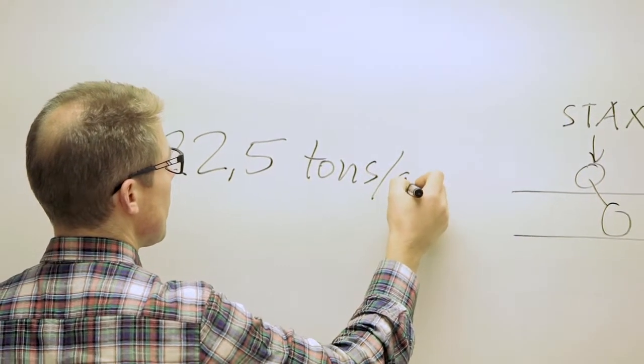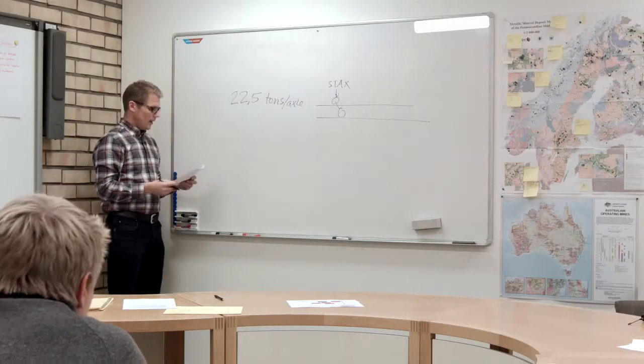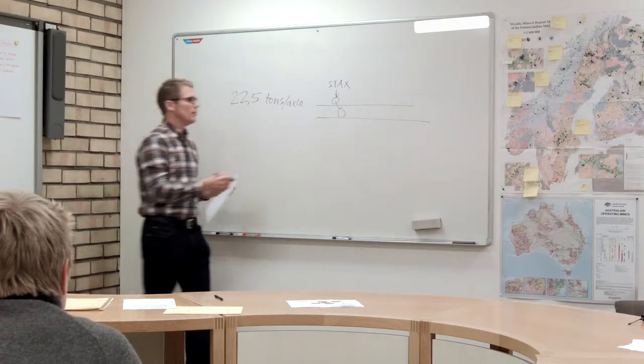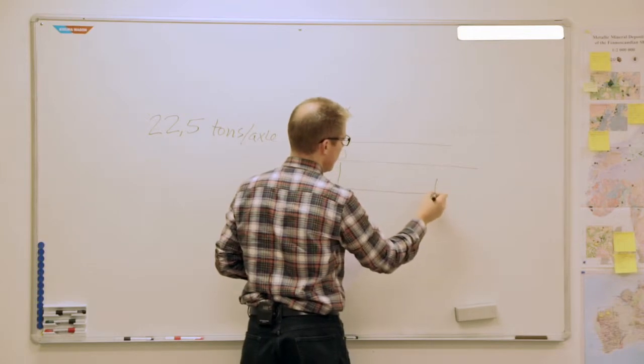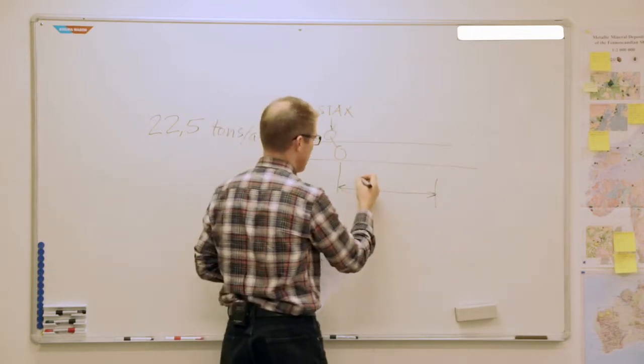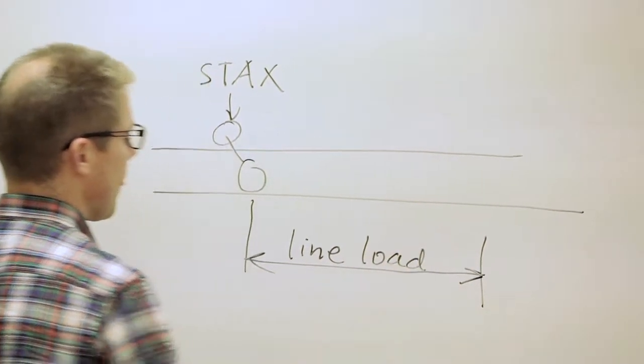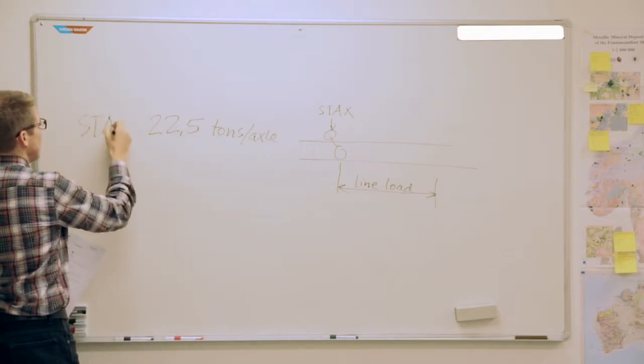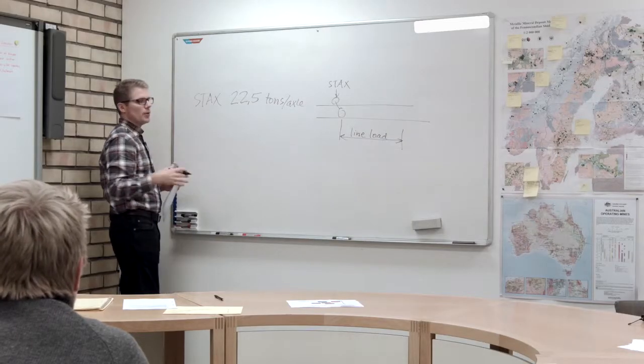The second limitation on the railroad is the maximum line load. That means how many tons per meter it can stand, the line load.